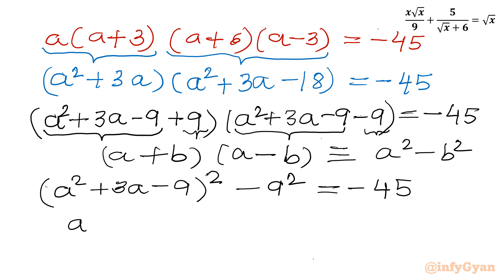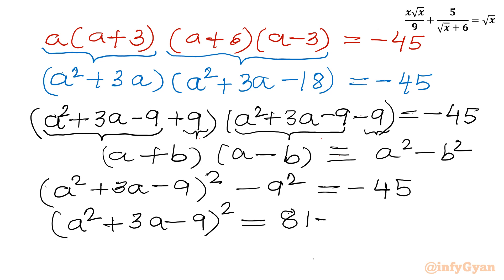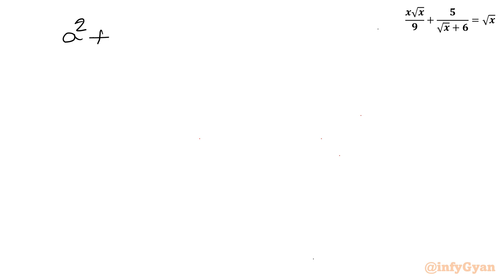Now I will be writing (a² plus 3a minus 9)² minus 81 equal to negative 45. So (a² plus 3a minus 9)² equal to 36, which is 6².